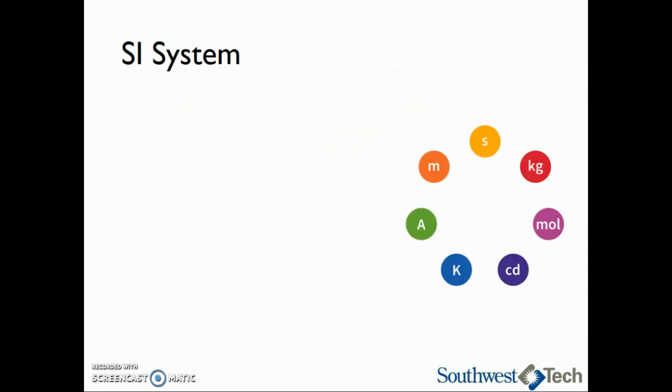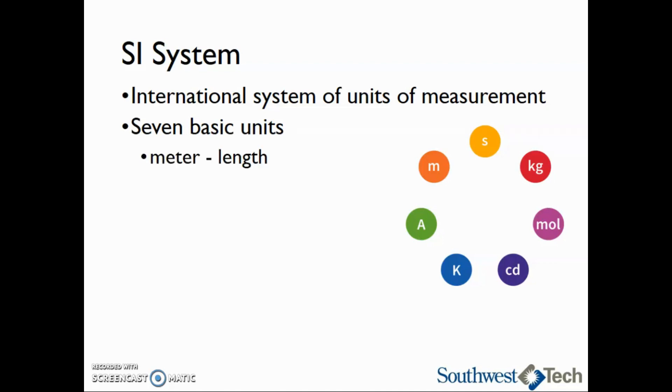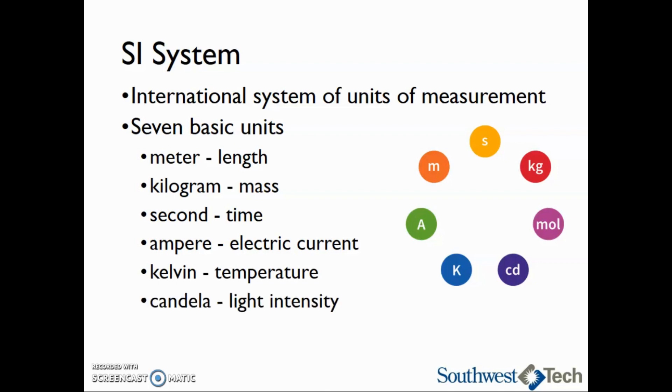The first system we're going to talk about is the SI system, which is the International System of Units of Measurement. In the SI system there are seven basic units: the meter for length, the kilogram for mass, the second for time, the ampere for electric current, the Kelvin for temperature, the candela for light intensity, and the mole for molecular substance.